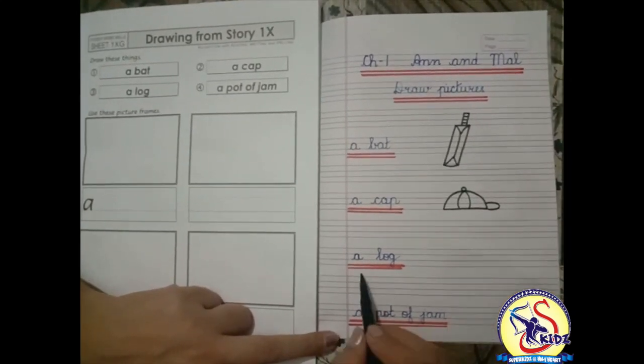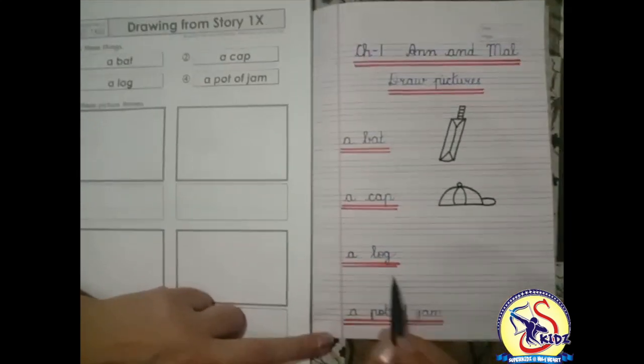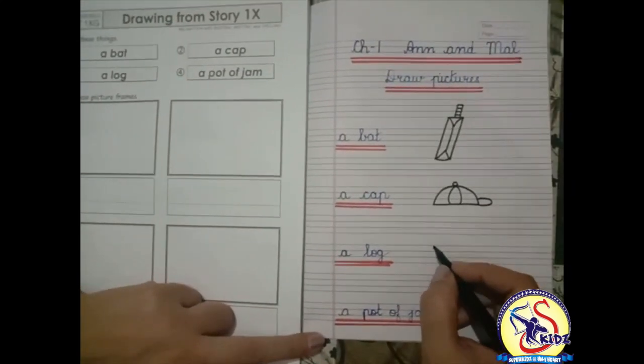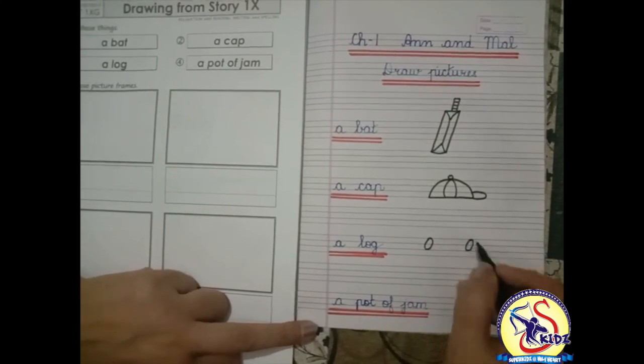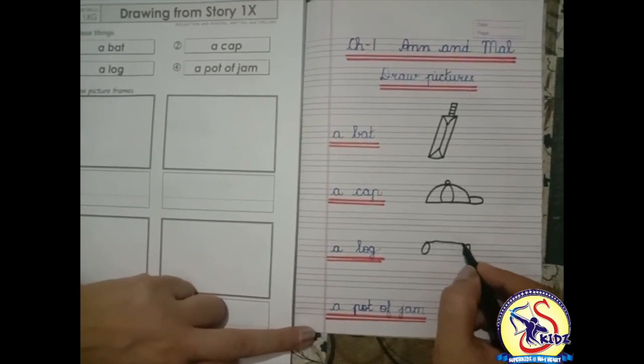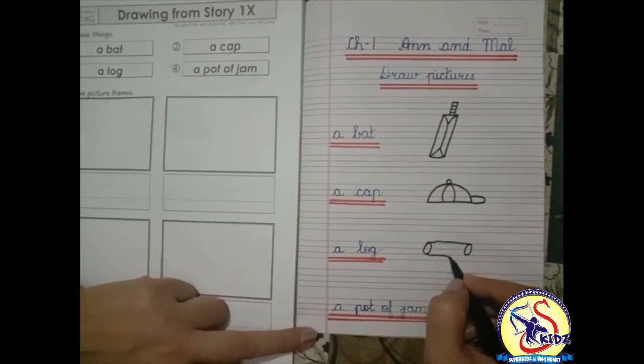Now we are going to draw the picture of a log. Make an oval, one more oval, sleeping line. This is the picture of a log.